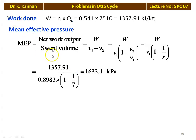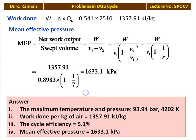For constant volume heat addition: T3 = T2 + Qs/Cv = 681.7 + 2510/0.713 = 4202 K. P3 = P2×(T3/T2) = 15.24×4202/681.7 = 93.94 bar. Cycle efficiency η = 1 − 1/7^0.4 = 0.541 = 54.1%. Work done W = η×Qs = 0.541×2510 = 1357.91 kJ/kg. Mean effective pressure = W/(V1−V2) = 1357.1/[0.8983×(1−1/7)] = 1633.1 kPa.